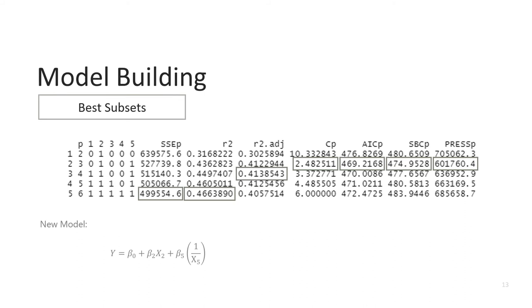Now we are going to determine what predictors to keep in the model. Here is the best subsets table, which measures SSEP, R-squared, adjusted R-squared, CP, AICP, SBCP, and PRESSP. When selecting a model, we look to maximize R-squared and adjusted R-squared and minimize all other values.